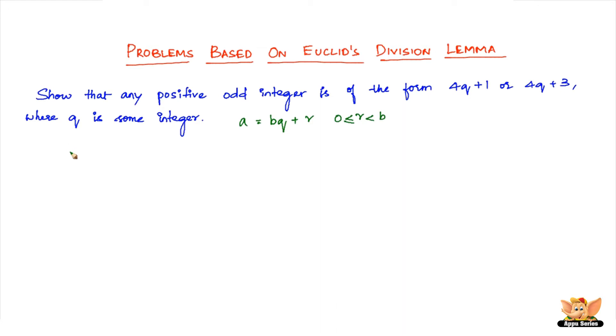Let us take any odd positive integer A and let B equal 4, for obvious reasons, because we need 4q+1 and B has to be 4.